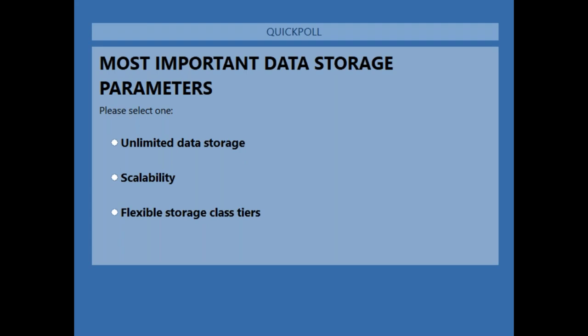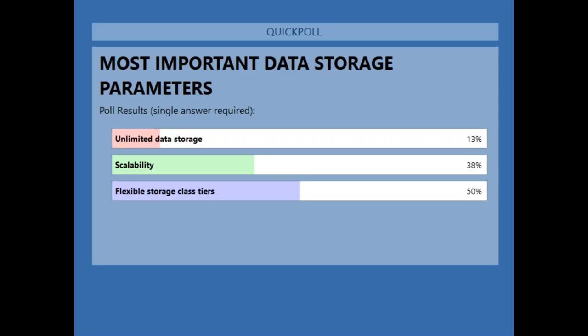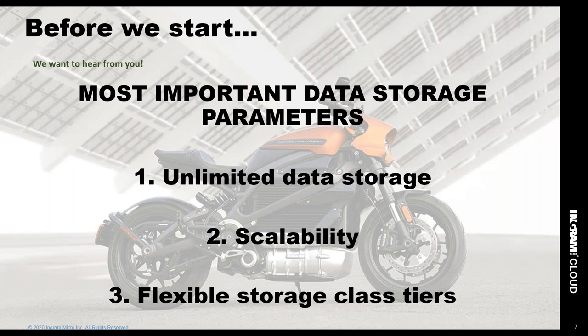Our third and final poll: what's the most important data storage parameter to you when looking for storage options — unlimited data storage, scalability, or flexible storage class tiers? The results are in — coming out on top is flexible storage class tiers. Some people go towards t-shirt sizes, some towards use cases. Scalability came pretty close as well, which is interesting to see.